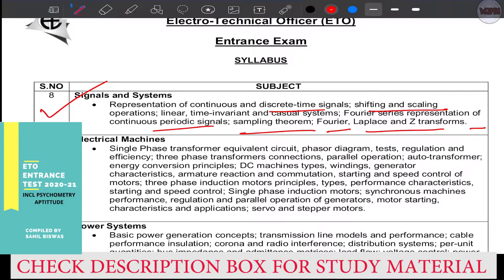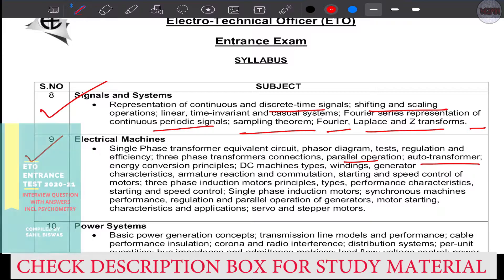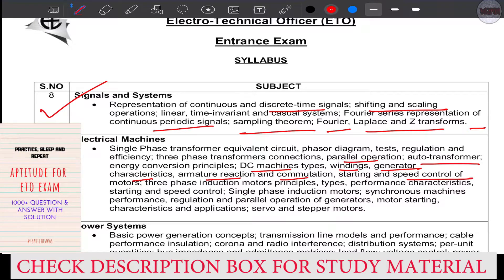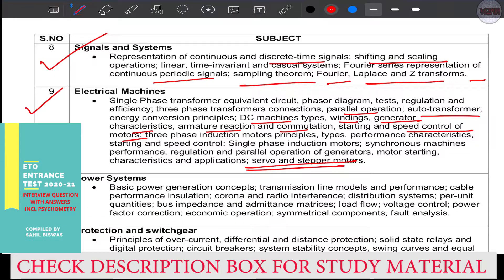The ninth: electrical machines. You'll get parallel operation, auto transformer, DC machine types, windings, generator characteristics, armature reaction, commutation, starting and speed control of motors, servo and stepper motors.